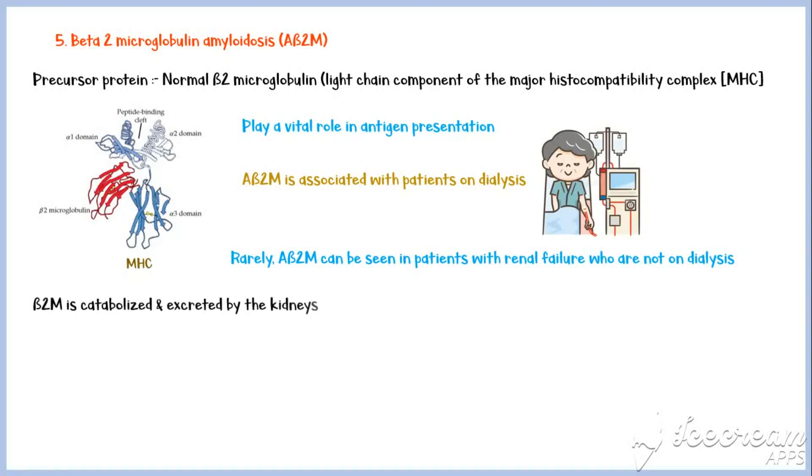Beta-2-microglobulin is catabolized and excreted by the kidneys. So, in patients with decreased clearance, this protein can accumulate, leading to abnormal folding and amyloid deposition.